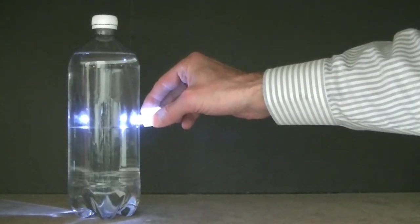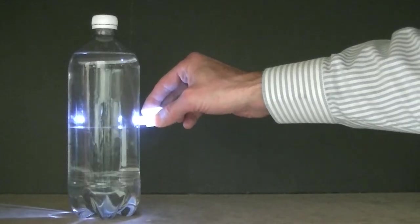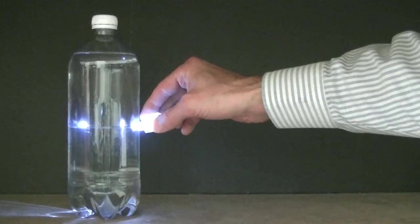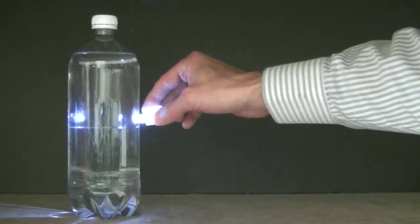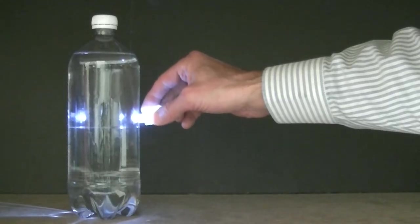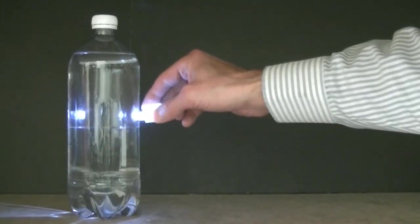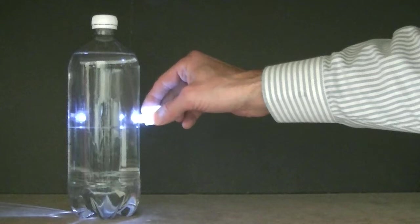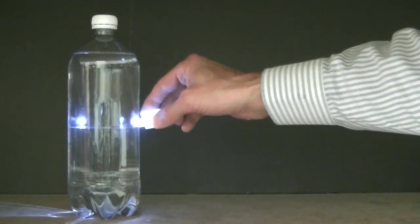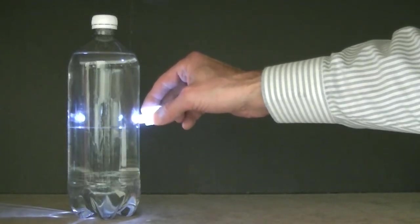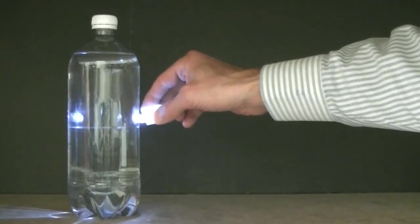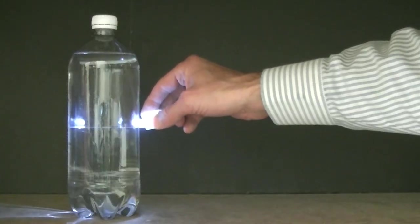The reason why you can see light at the interface is because impurities exist there. These impurities are made of small particles. Even though they're small, they're much larger than molecules. The particles are large enough to scatter light. So instead of all the light passing directly through the bottle, some of it gets scattered into the camera. That's why you can see the interface.